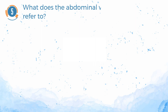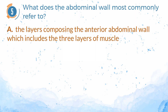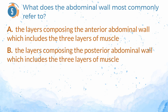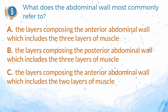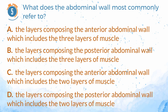Number 5. What does the abdominal wall most commonly refer to? A. The layers encompassing the anterior abdominal wall which includes the three layers of muscle: the transversus abdominis, the internal and the external oblique. B. The layers encompassing the posterior abdominal wall which includes the three layers of muscle: the transversus abdominis, the internal and the external oblique. C. The layers encompassing the anterior abdominal wall which includes the two layers of muscle: the internal and the external oblique. D. The layers encompassing the posterior abdominal wall which includes the two layers of muscle: the internal and the external oblique.